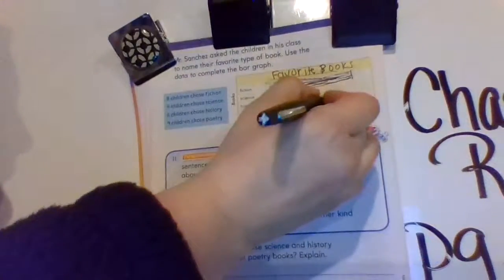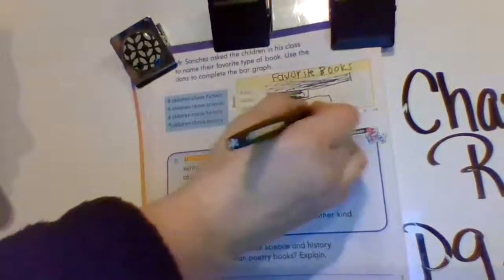History, we have 6, so we're going to go to the 6, draw a line there, shade in those bars to the 6.